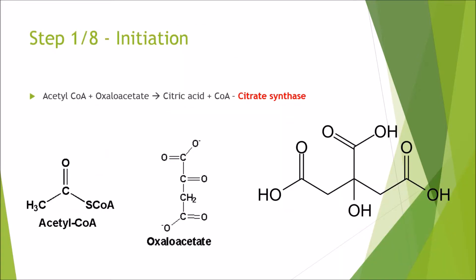Step 1 of 8 is initiation. This is where acetyl CoA and oxaloacetate bond together to form citric acid and CoA, and that is catalyzed by the enzyme citrate synthase. Acetyl CoA and oxaloacetate come together to form citric acid, which is also the tricarboxylic acid. We have one carboxylic acid group here, another here, and another here — hence the name the TCA or tricarboxylic acid cycle.